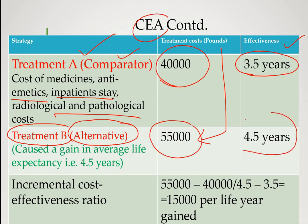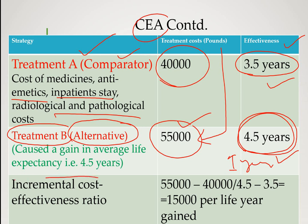The benefit of treatment B is that it gives a life expectancy of 4.5 years compared to 3.5 years — so one year more is gained. This one additional year is at an extra cost of 15,000 pounds. You determine the incremental cost and the incremental cost effectiveness ratio. The patient is going to pay 15,000 pounds per life year gained in expectancy. This is called cost effectiveness analysis.